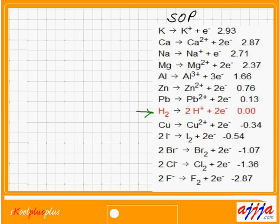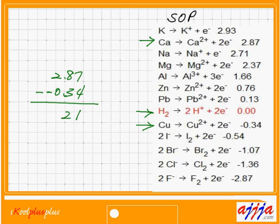What if I used calcium and copper? Then automatically: 2.87, and minus minus means plus, so minus negative 0.34 — that's going to be positive anyway. So 2.87 plus 0.34 gives 3.21 volts. Things like that.